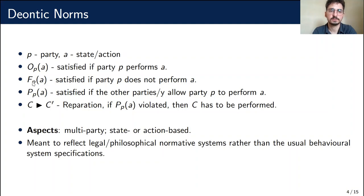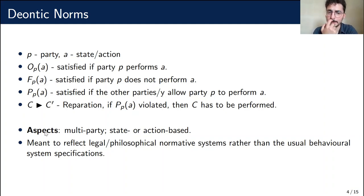A contract is a structure over these norms — for example, with sequence, conjunction, and the usual operators. The semantics is that when at any point the contract is violated, the parties must start satisfying the reparation contract to be in compliance. These specifications are multi-party, relating to the interaction between different parties, and they can be either state or action-based, which can have different implications representation-wise.